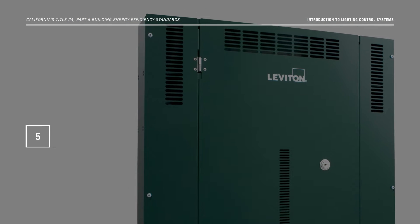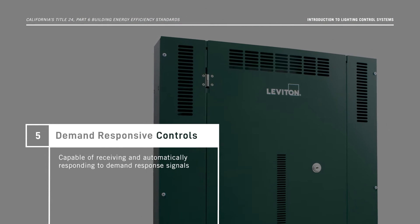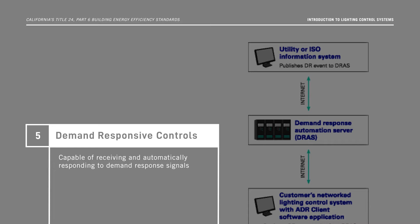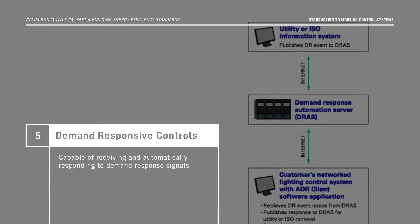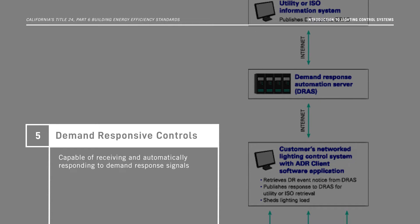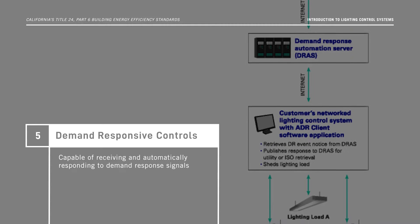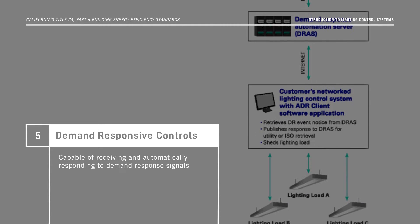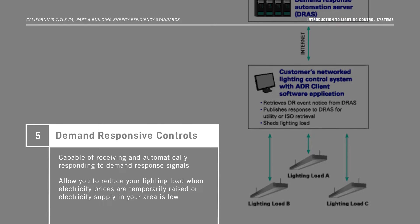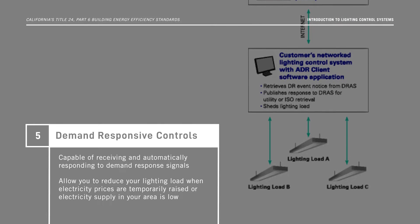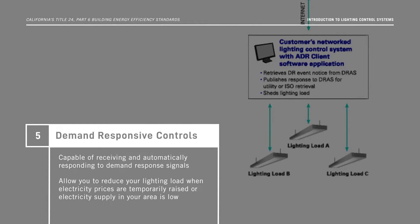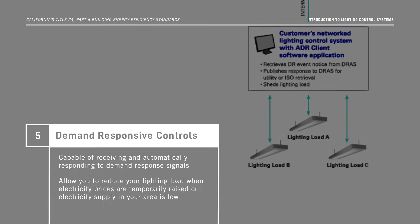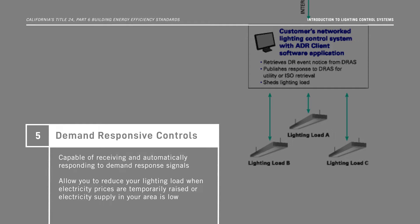The fifth and last control layer is demand responsive controls. These controls are capable of receiving and automatically responding to a demand-response signal sent from a utility or third-party program implementer. They allow you to reduce your lighting load when electricity prices are temporarily raised or the electricity supply in your area is critically low. These controls must meet requirements in Section 110.12 C, demand-responsive lighting controls.